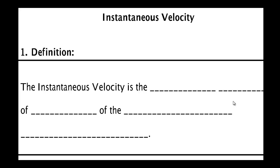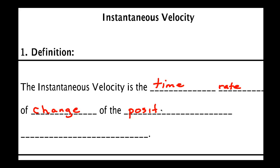So for velocity, what is its definition? Its definition is the time rate of change of the position vector. In calculus, when you say rate of change, that implies a derivative. For those not in a calculus-based course, they don't need to be able to do calculus, but it's worth understanding what the word means. 'Time' here means it's the derivative with respect to time — you're dividing by delta t and letting delta t go to zero.